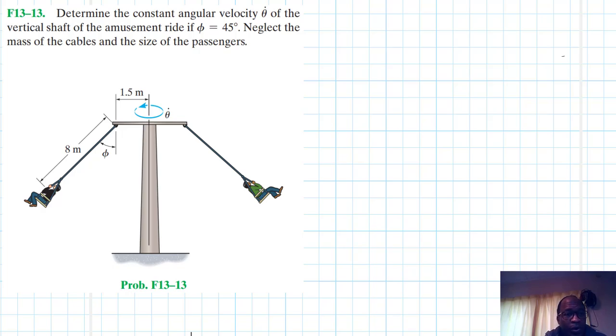Hello, I welcome you all. The problem reads: determine the constant angular velocity theta dot of the vertical shaft of the amusement ride if phi is 45 degrees. Neglect the mass of the cables and the size of the passengers.